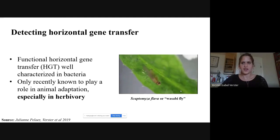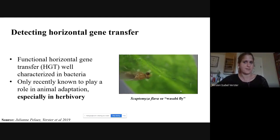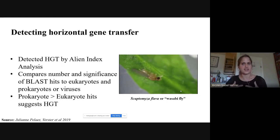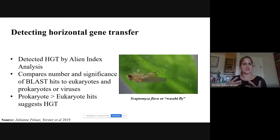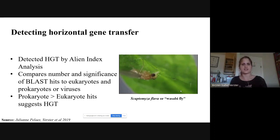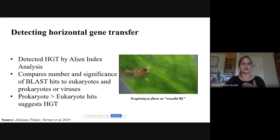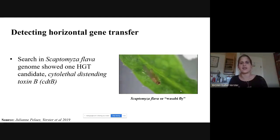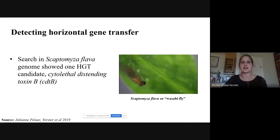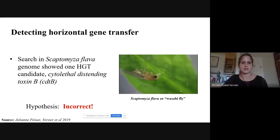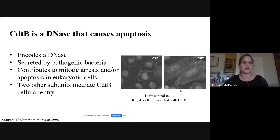After this analysis, we didn't find evidence of transfer of any herbivory-related genes, but we did find one gene called cytolethal distending toxin B, CDT-B, giving me a new direction for my dissertation. CDT-B is usually secreted by pathogenic bacteria and is known to be highly deleterious toward eukaryotic cells: normal cells intoxicated with CDT-B try to divide but cannot, and eventually die. So it's bad for animal cells.